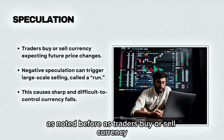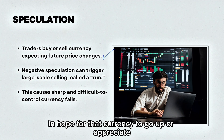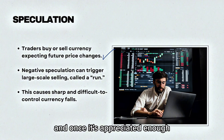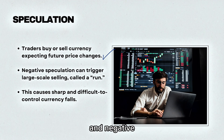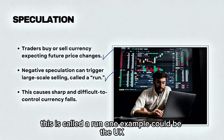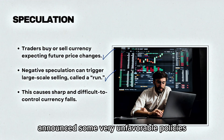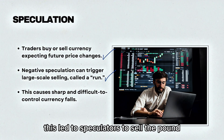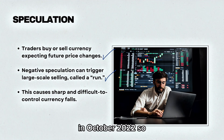Another reason is speculation. Traders buy or sell currency expecting future price changes — speculators buy a currency hoping it will appreciate, and once it has appreciated enough, they sell it for another currency. Negative speculation can trigger large-scale selling, called a run. One example is the UK, when Liz Truss and Kwasi Kwarteng announced some very unfavorable policies, which led speculators to sell the pound pretty much on the day of the announcement in October 2022.